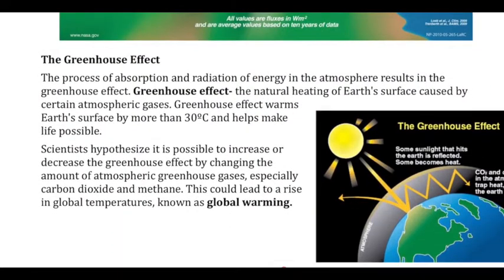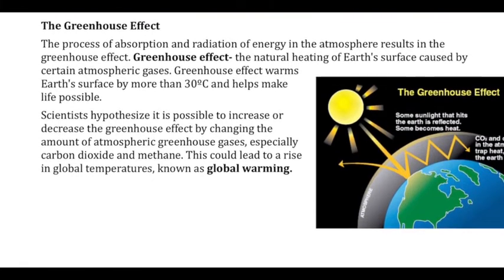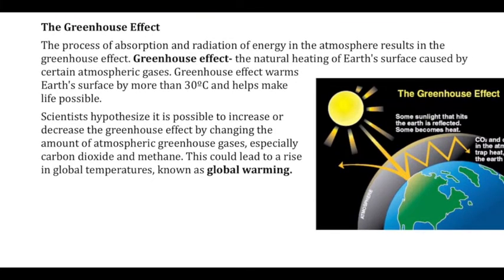This is called the greenhouse effect. Some of the sunlight strikes the earth, it loses a little bit of energy, it warms the earth, and then that lower-energy reflection is no longer light — it's more like heat — and it gets trapped in the thick atmosphere.